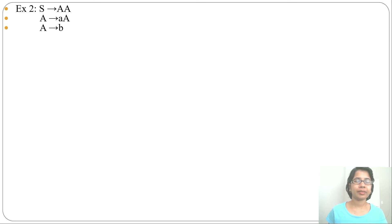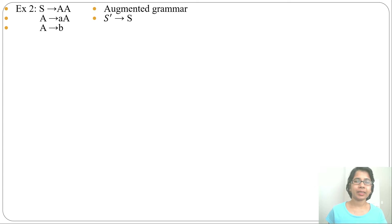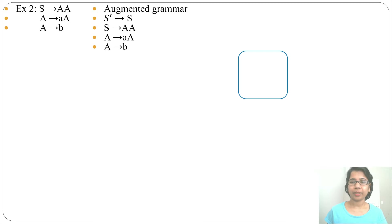In the previous lecture I discussed how to construct LR automation and parsing table with example one. Let's discuss example two. The grammar is: S derives AA, A derives AA, A derives B. First, we need to write the augmented grammar — we add one augmented production: S' derives S. The augmented grammar is now done.